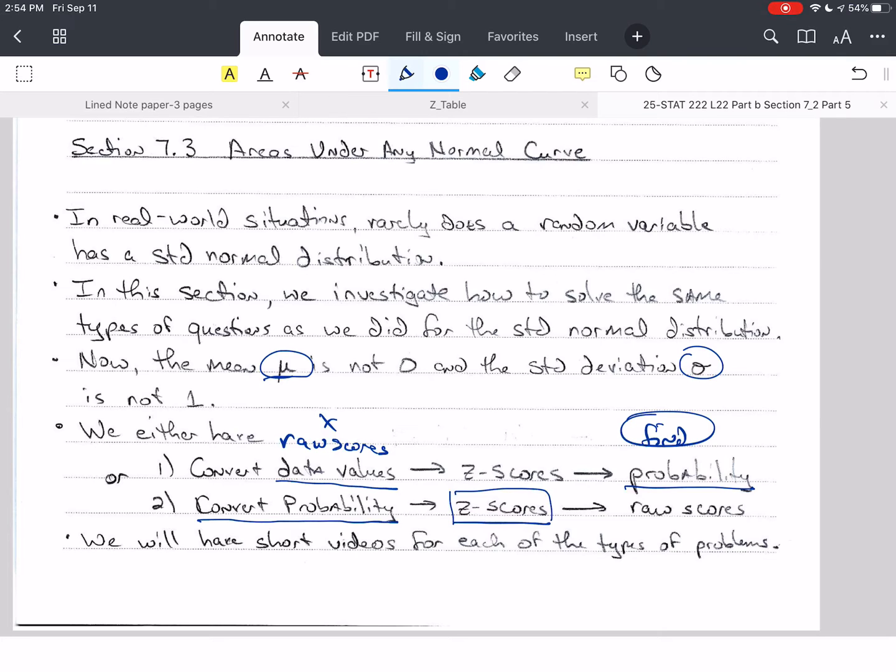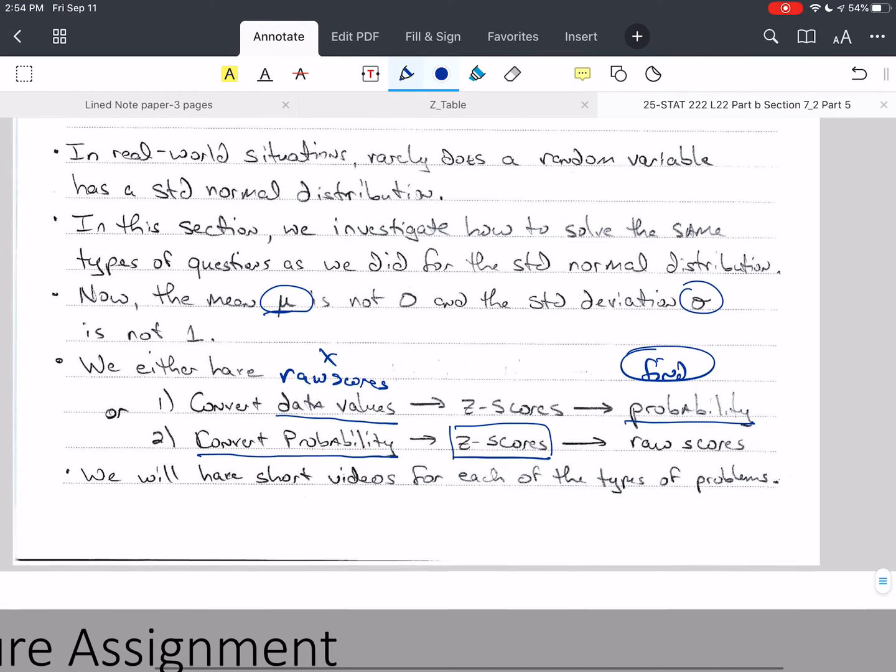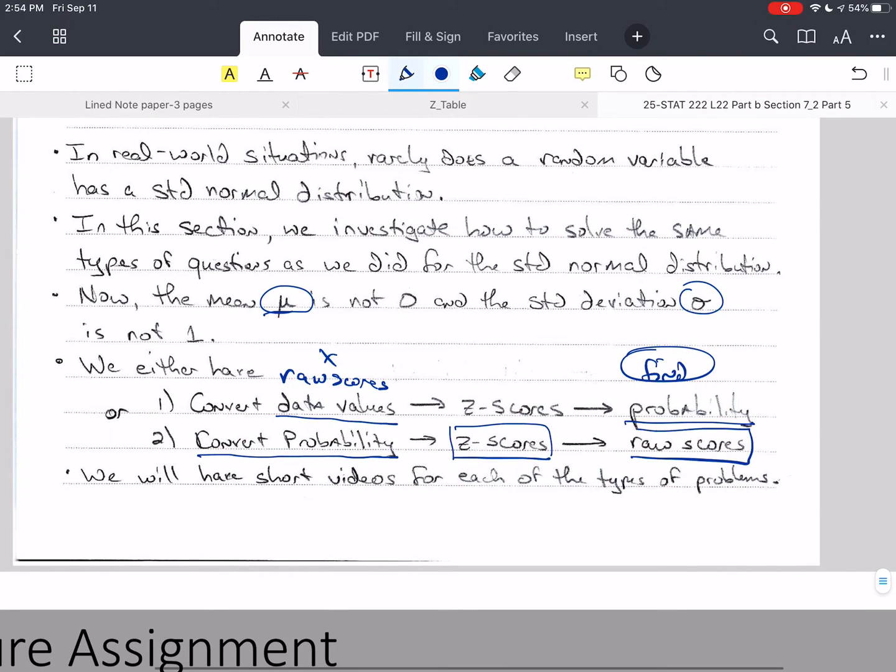And once we have the z score, we can reverse the process like we did up here and find the raw score, which is usually what we're interested in. You don't want people to tell you the z scores if you ask between what two heights or above what height does it take, how tall do you have to be to be in the top 10% of females in the U.S. as far as height. You don't want to know a z score. You want to know an actual height in inches or in feet and inches.